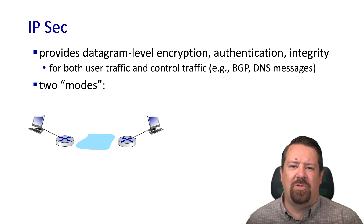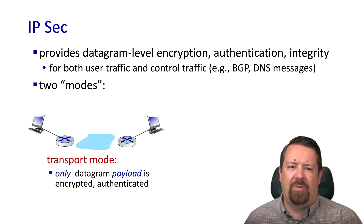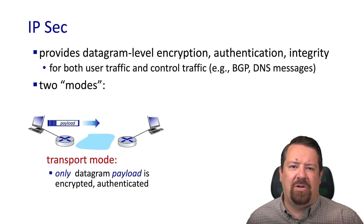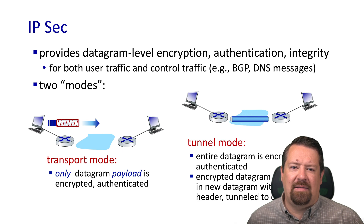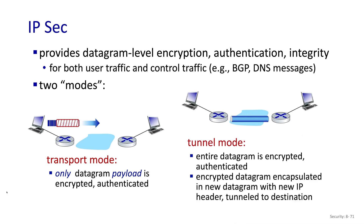IPsec has two modes of operation. The transport mode, where only the datagram payload is encrypted and authenticated — so if our secure tunnel is between two routers, we have the packet with its payload arriving at the left router, the payload being encrypted and then sent across to the other router. In contrast, we have the tunnel mode, where the entire datagram is encrypted and authenticated, and that encrypted datagram is encapsulated in a whole new datagram with a new IP header.